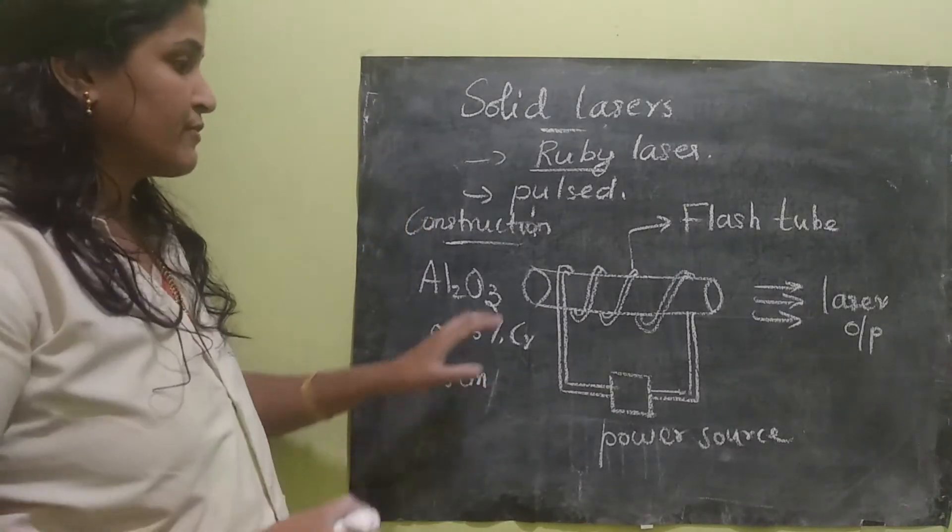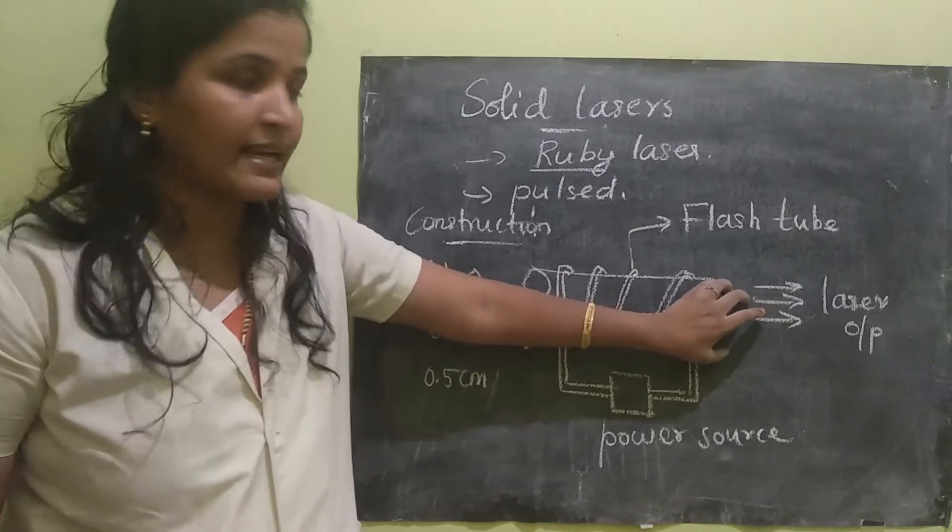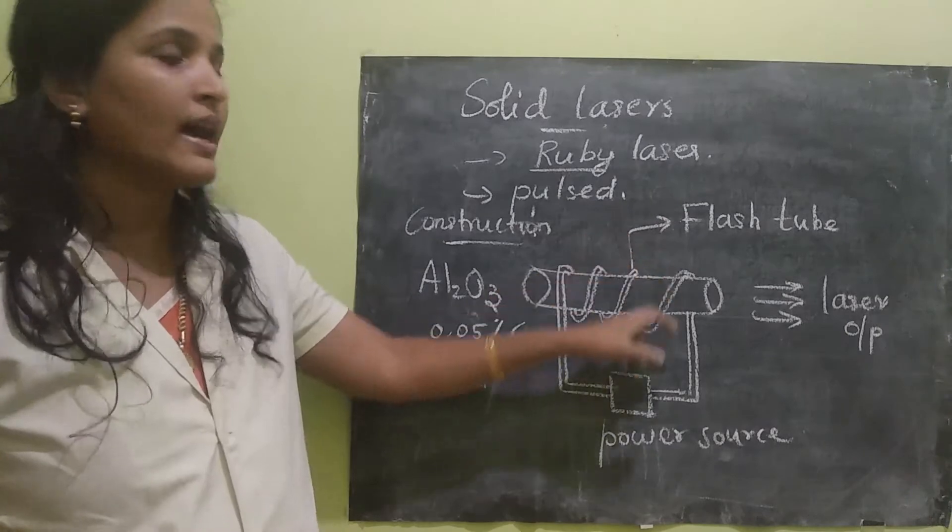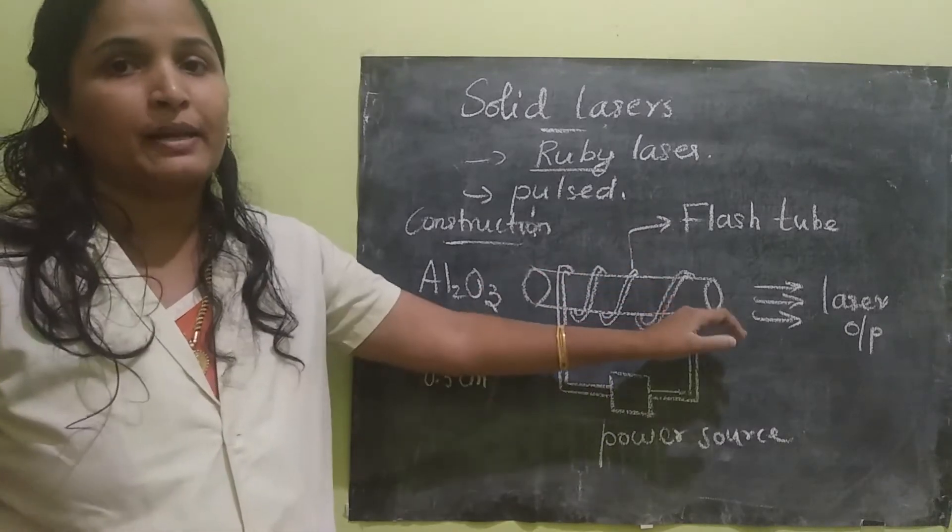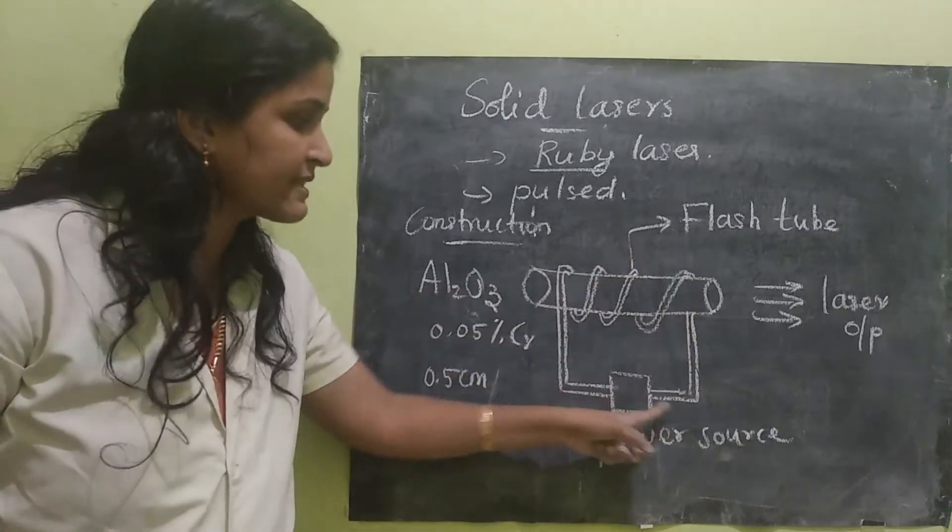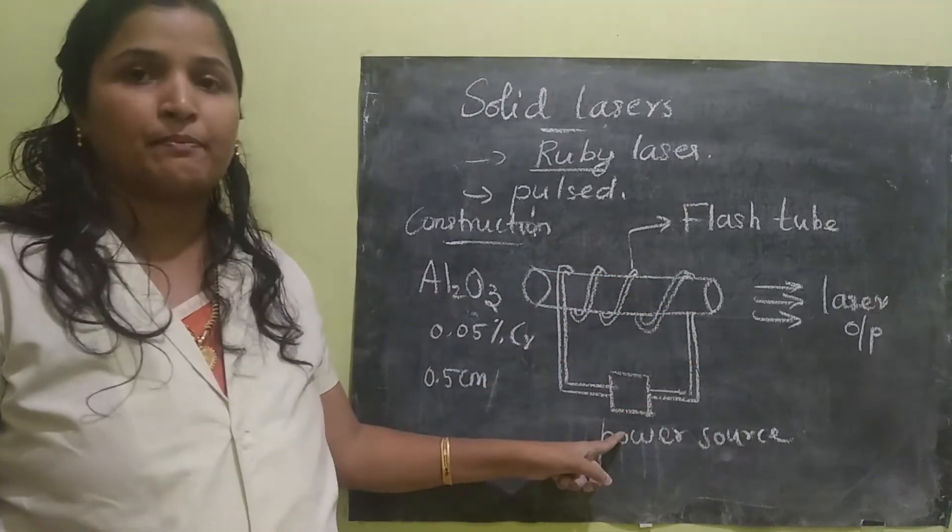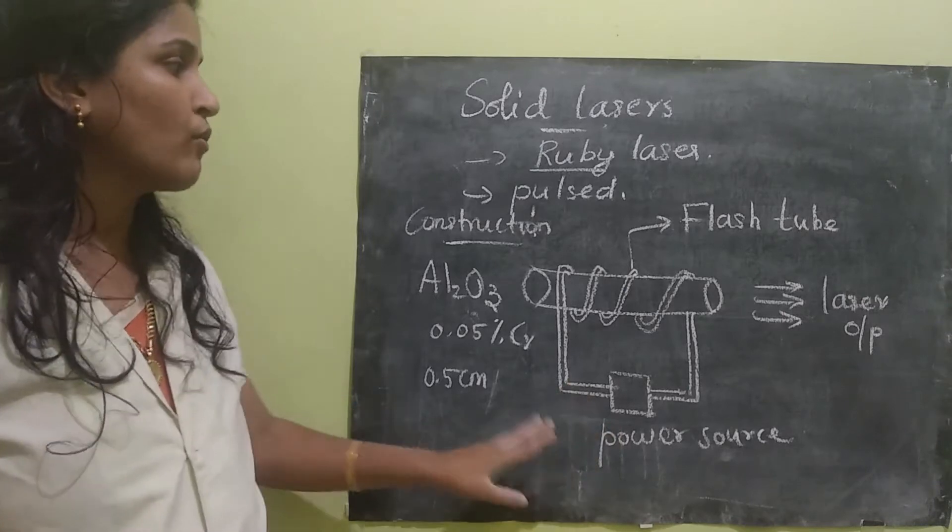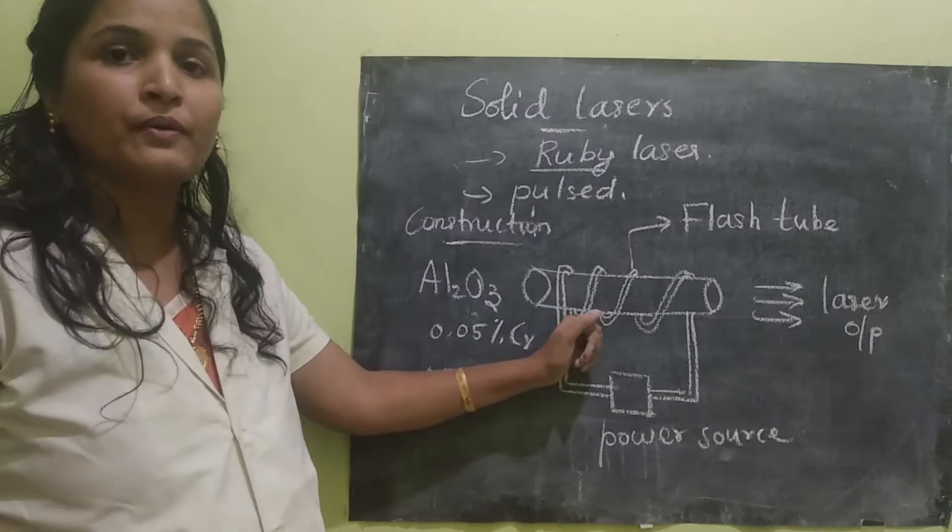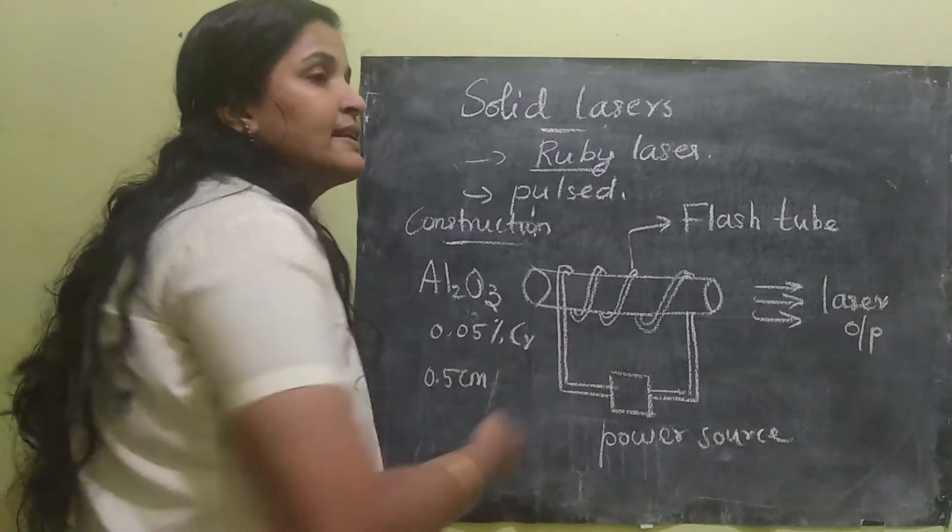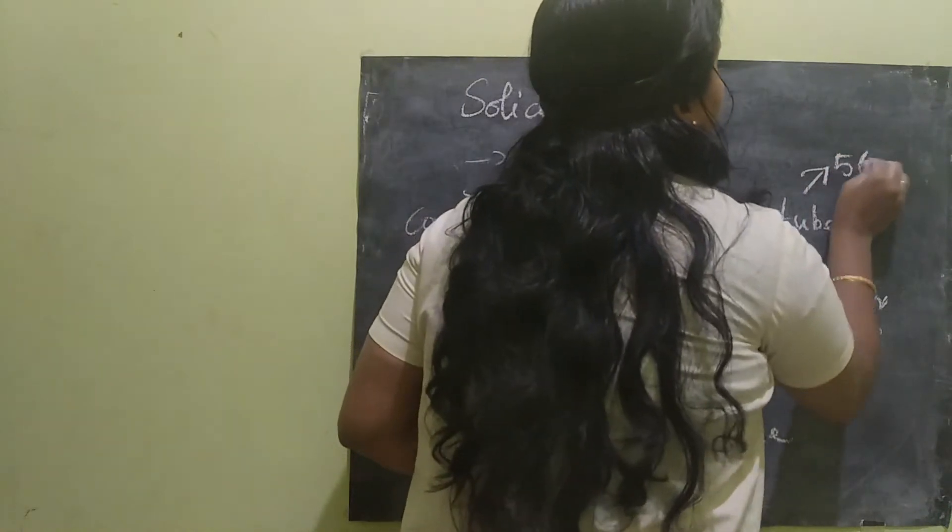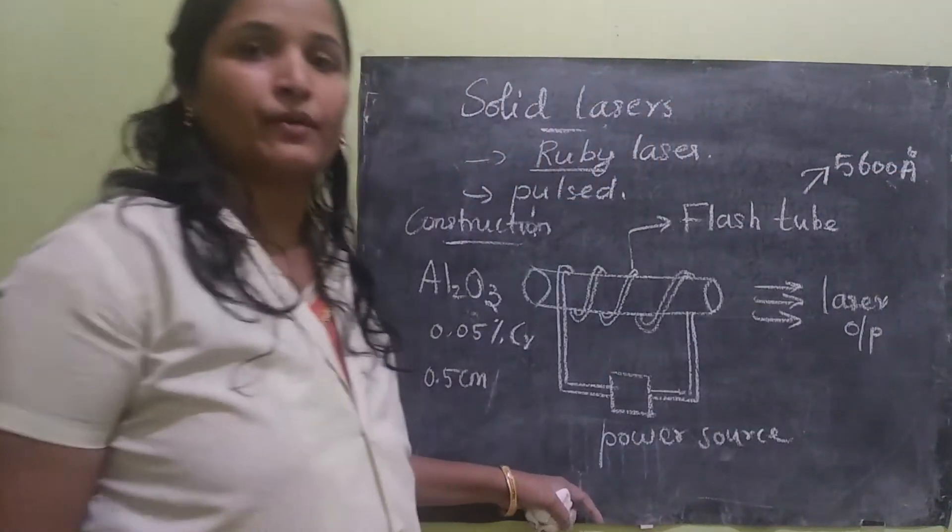It is formed into a shape of cylinder as I already said. We have a flash tube that is wound around the active element that is Al2O3. It is wound around the active element and it is given to the power supply. Once the power supply is given to the flash tube, it will emit a light having a wavelength of 5600 Armstrong.